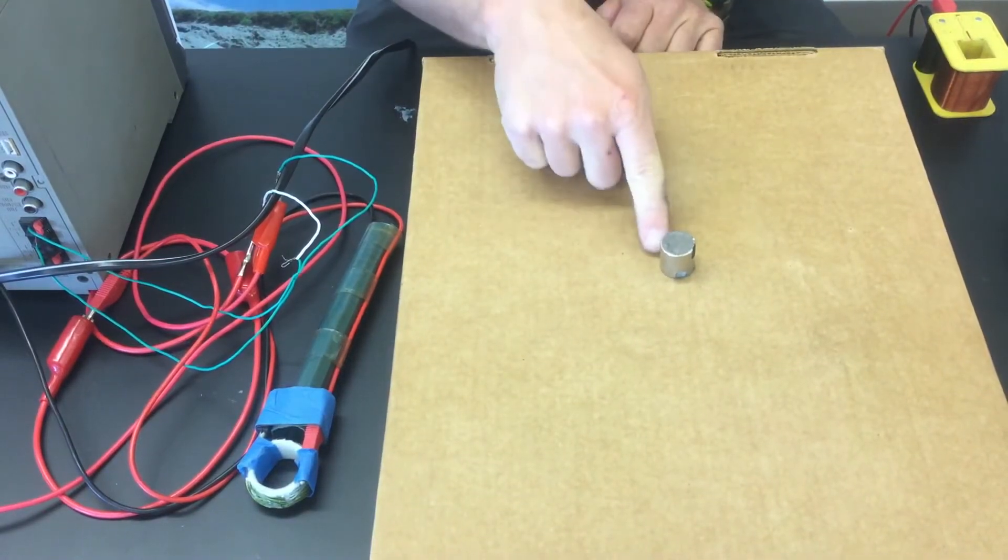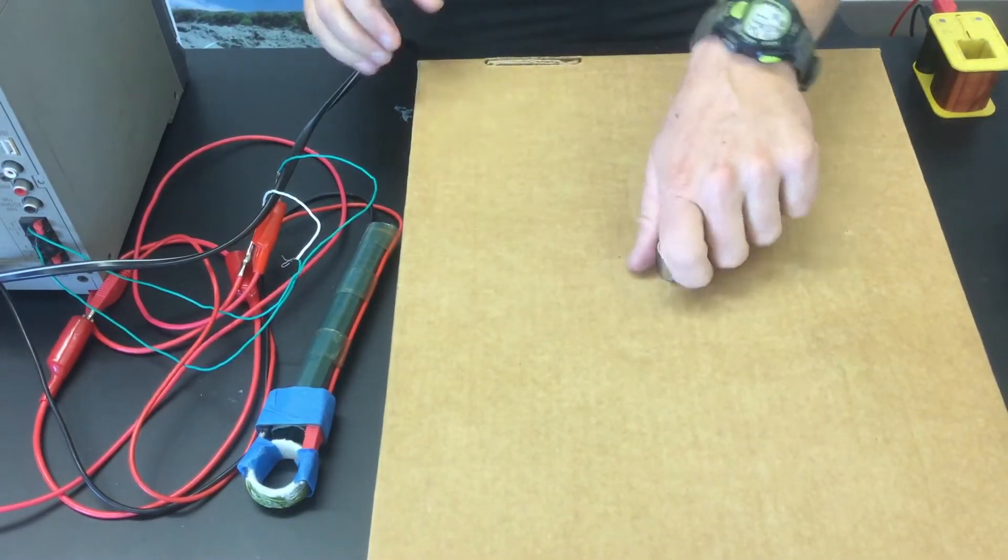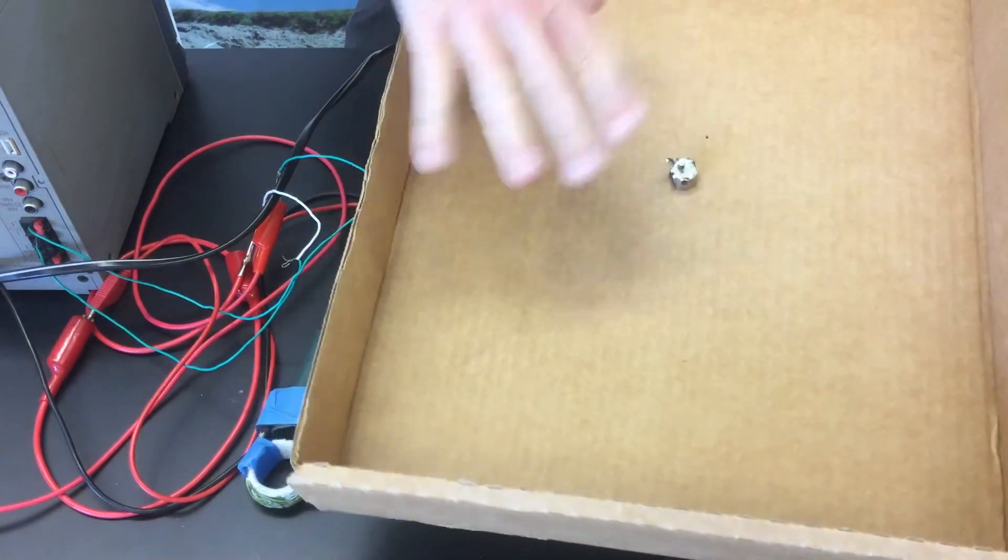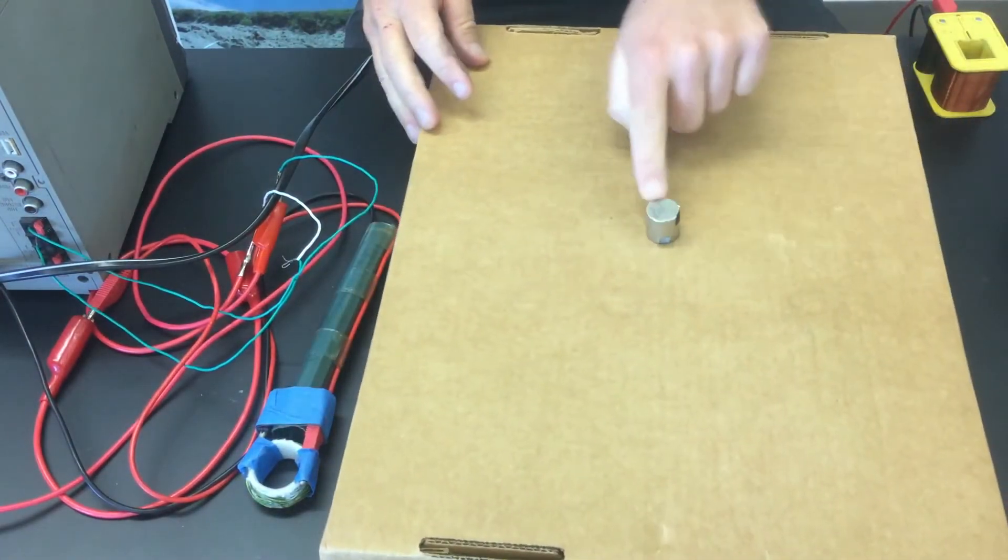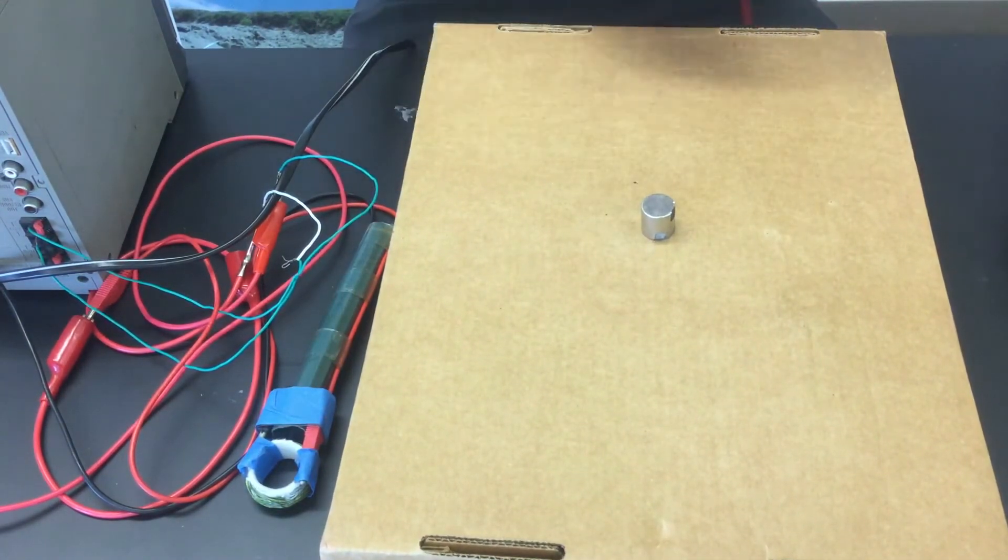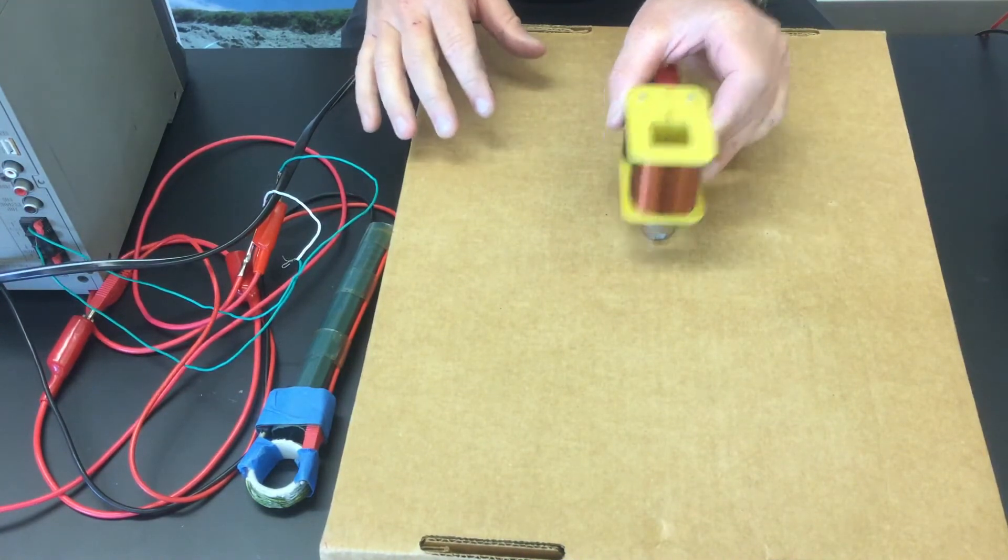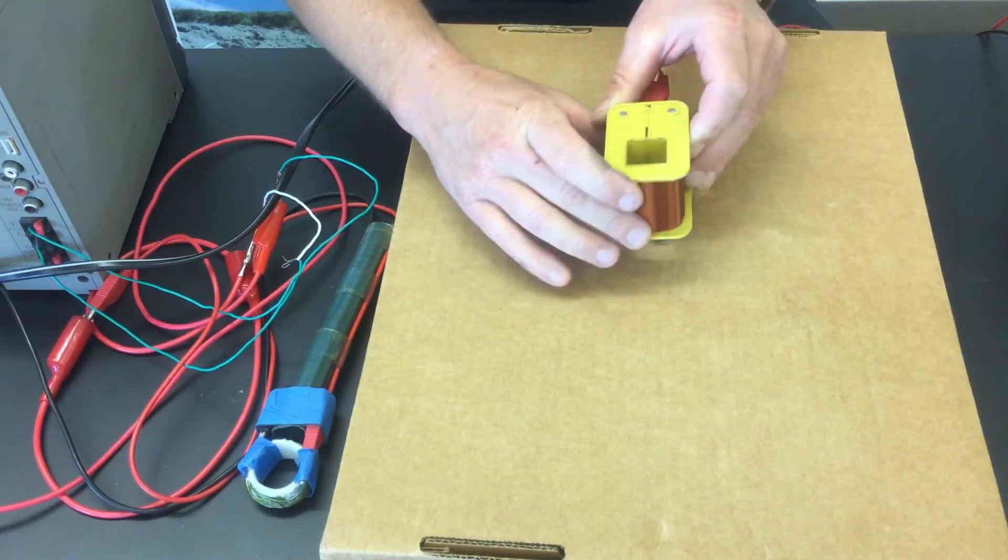Alright, so what I've done here is I've just taken that magnet and I've put it so that there's one magnet on one side of a cardboard lid and another magnet on the other side. And you can see that when I bring this coil by it, it still makes that sound when I get close to the magnet.